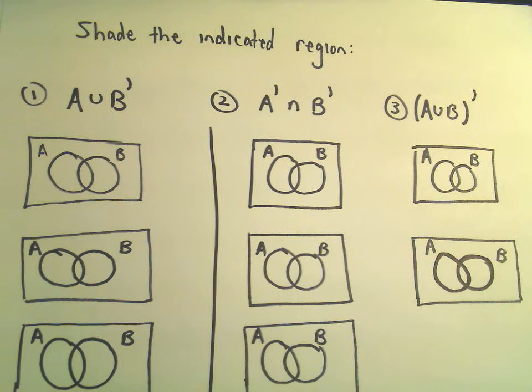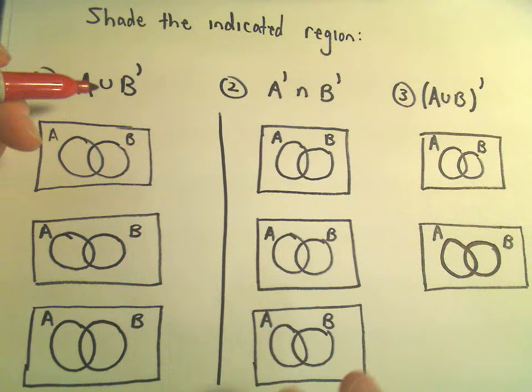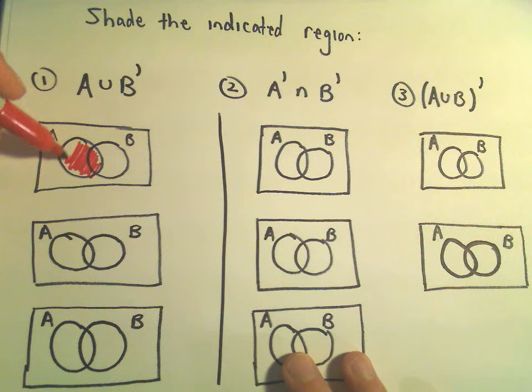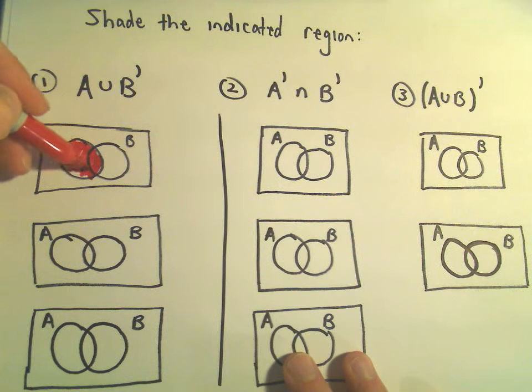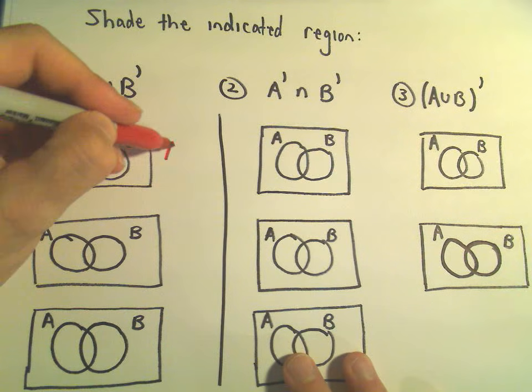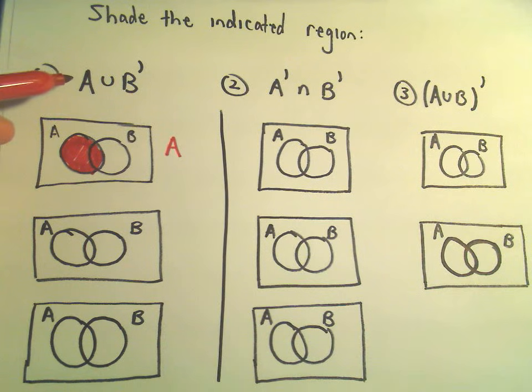So, in the first example here, if we want to do A OR NOT B, well, if we shade A, we would just simply shade everything in circle A. So now I've simply shaded the set A, so I'm going to kind of build up to it. So that would be just simply A.